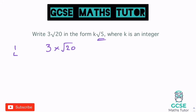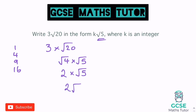Thinking about the square numbers that go into 20: 1, 4, 9, 16 — 4 goes into 20. So just the root 20 part can be written as the square root of 4 multiplied by the square root of 5. Root 4 is 2, so it's 2 lots of root 5, which is 2 root 5. Now we just remember that there was a 3 there originally — it was 3 lots of root 20, and we've found root 20 is the same as 2 root 5. So we bring the 3 back down: 3 lots of 2 root 5.